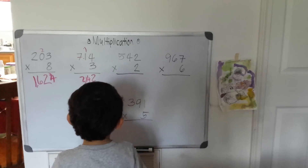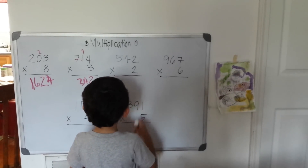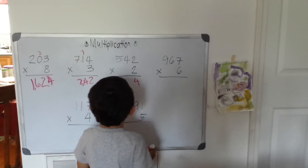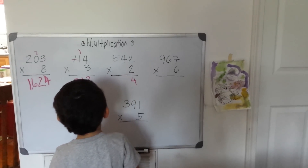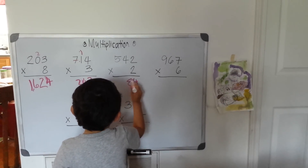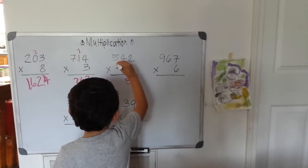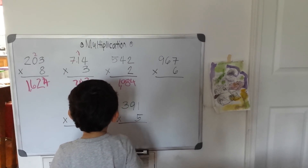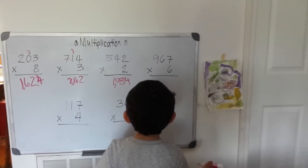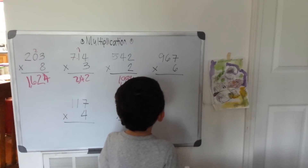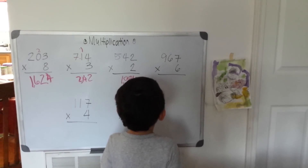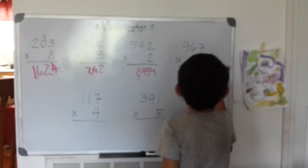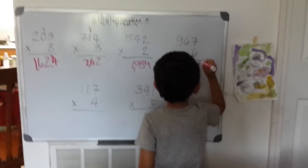Two times two. Two times two. Two times four. Three times. Two times five. Ten. 1084. 967. 6. 7, 6. 42.